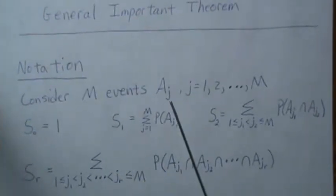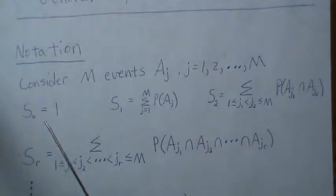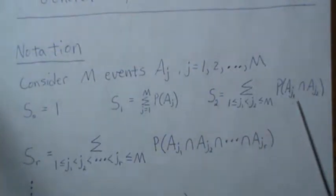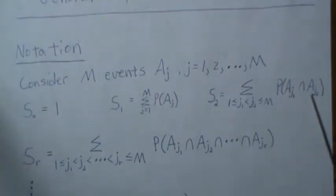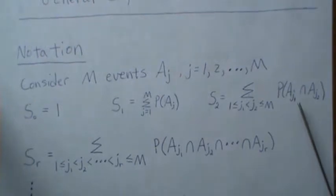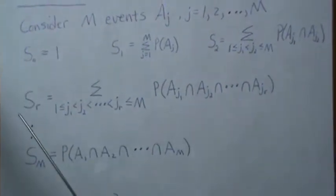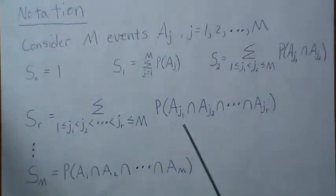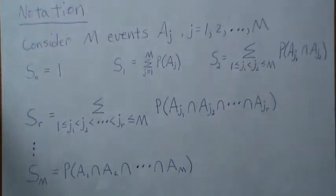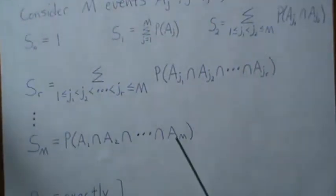Let's consider M events, A_J1 through A_JM. We're going to let the notation S0 be 1, S1 be the sum of the probabilities of the individual events, and S2 be the sum of all combinations of the probability of two events happening. This is not saying the probability that exactly two events happen — it's just saying that these two specific events must happen. We're not saying anything about the remaining M minus two events. SR is all combinations of the probability that these specific R events happen, not saying anything about the M minus R events. SM, since we only have M events, is the probability that all the events happen.